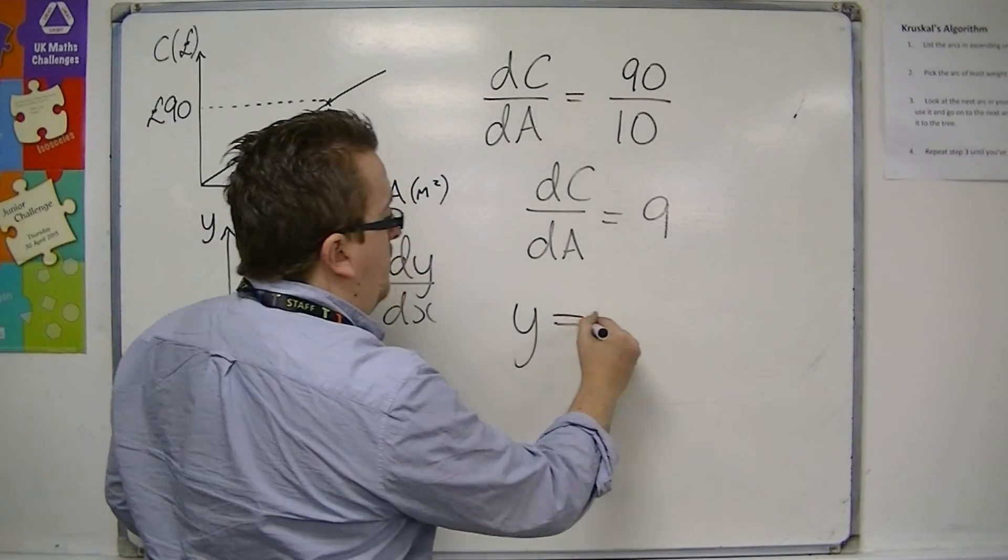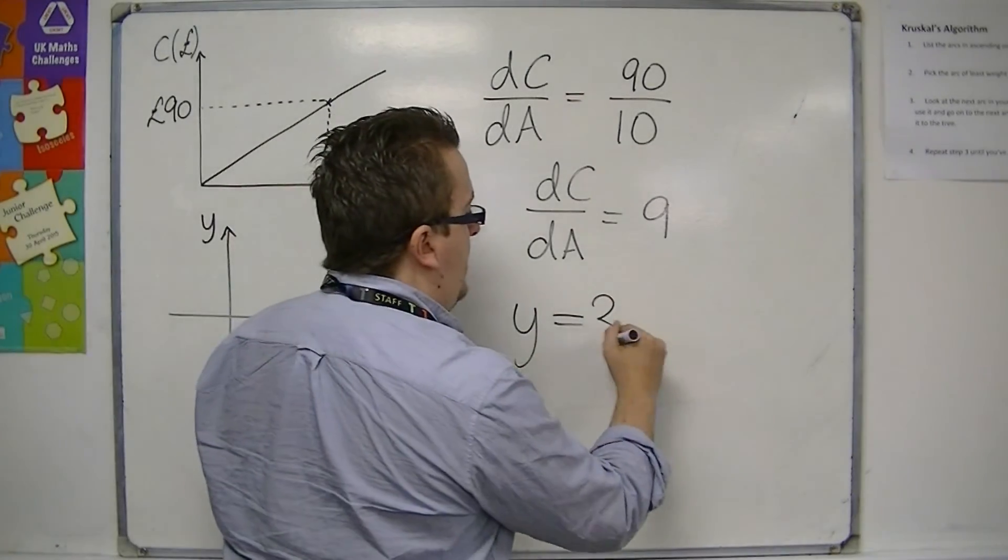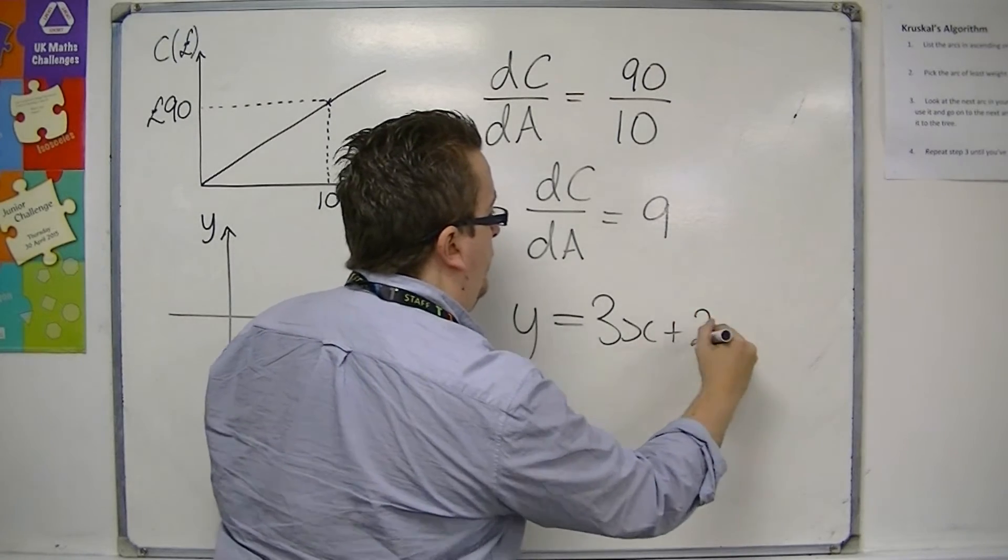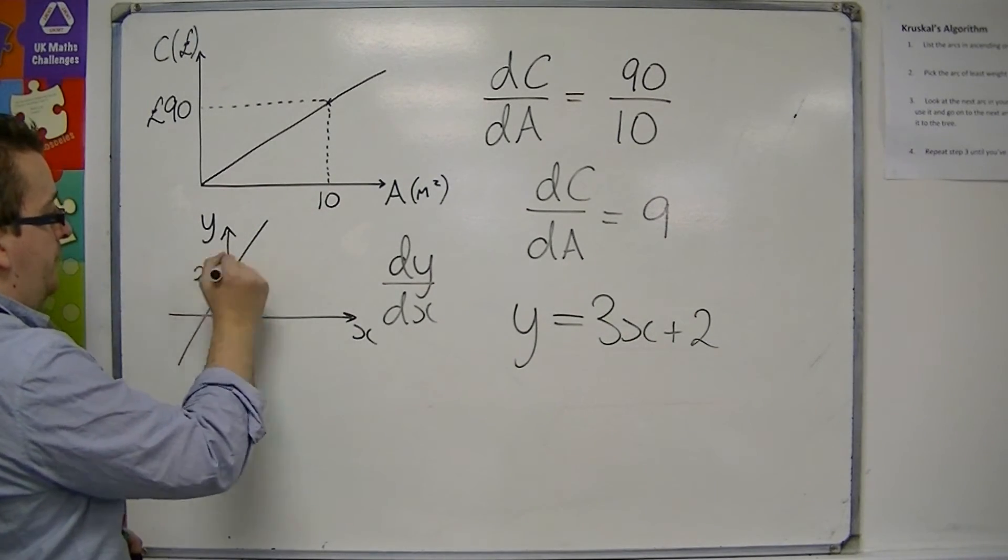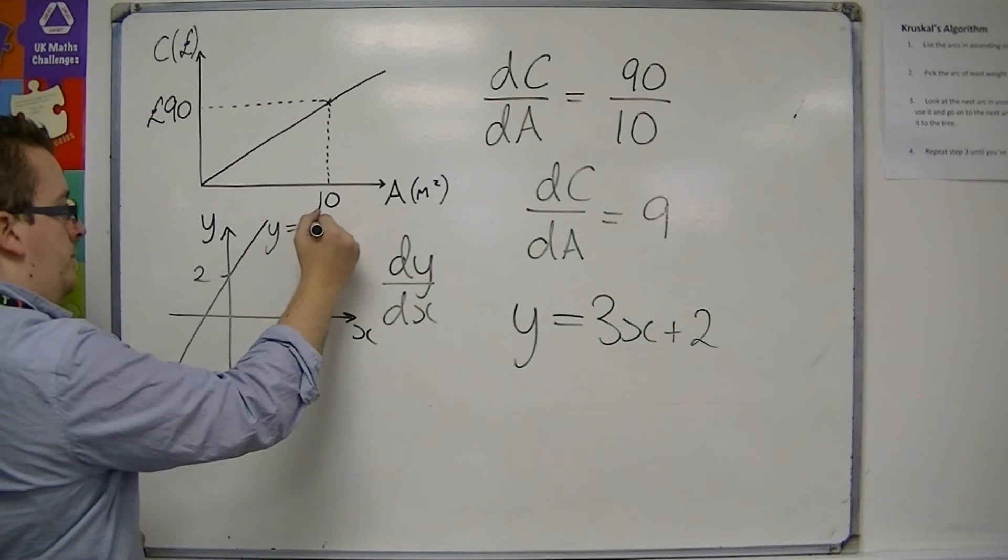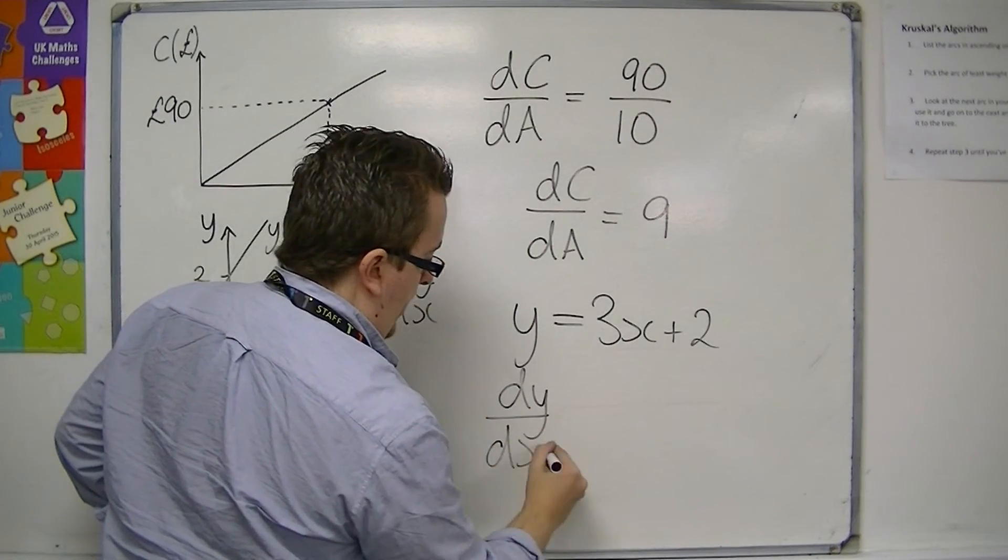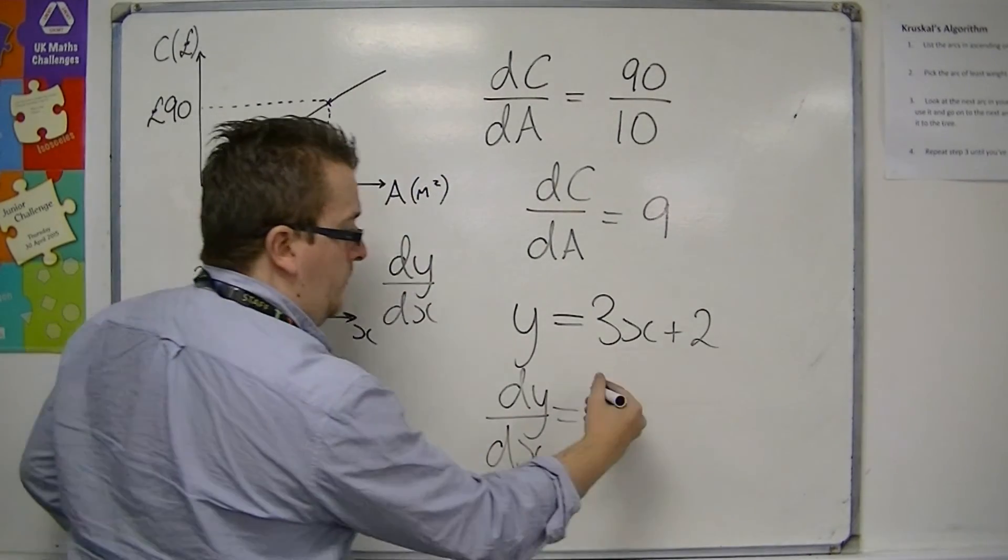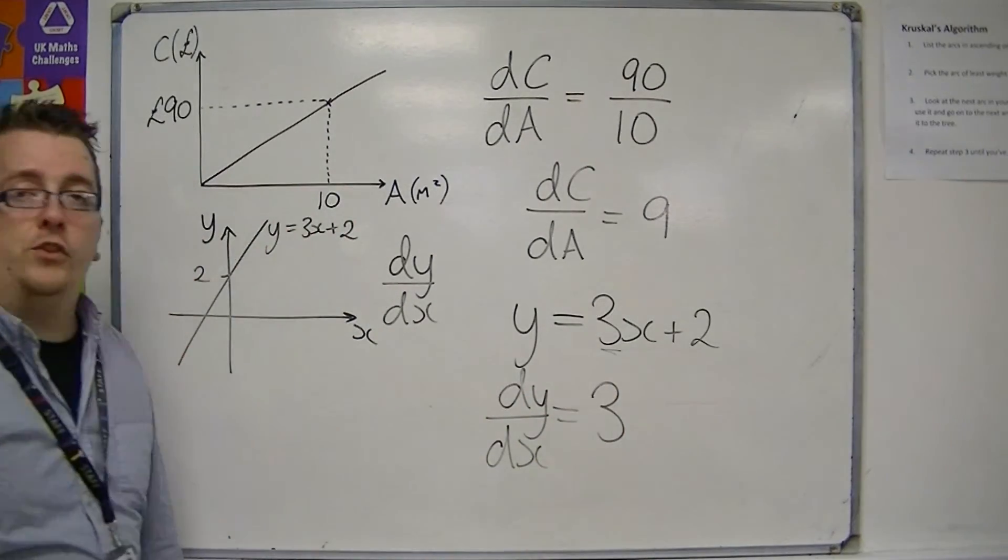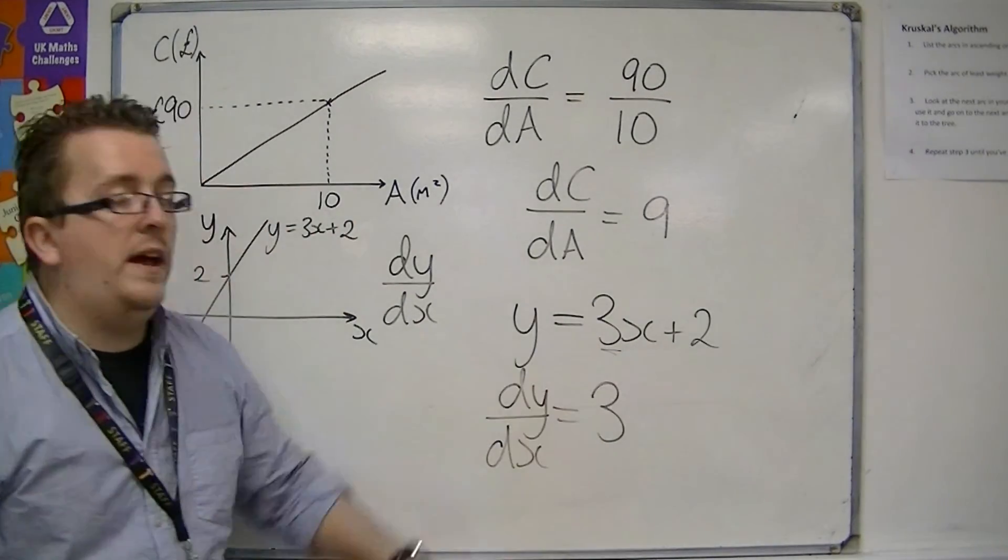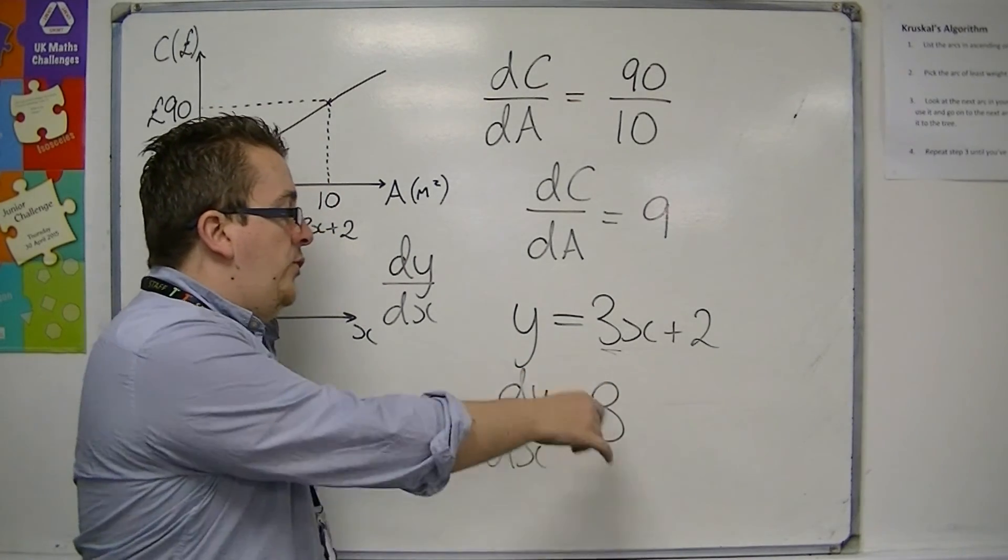If you had, for example, a straight line, y is equal to 3x plus 2, and that would be represented by a straight line like this, then the gradient or the rate of change of this line is 3. We can easily identify that it's 3 because that is the coefficient of x. So, dy by dx is 3.